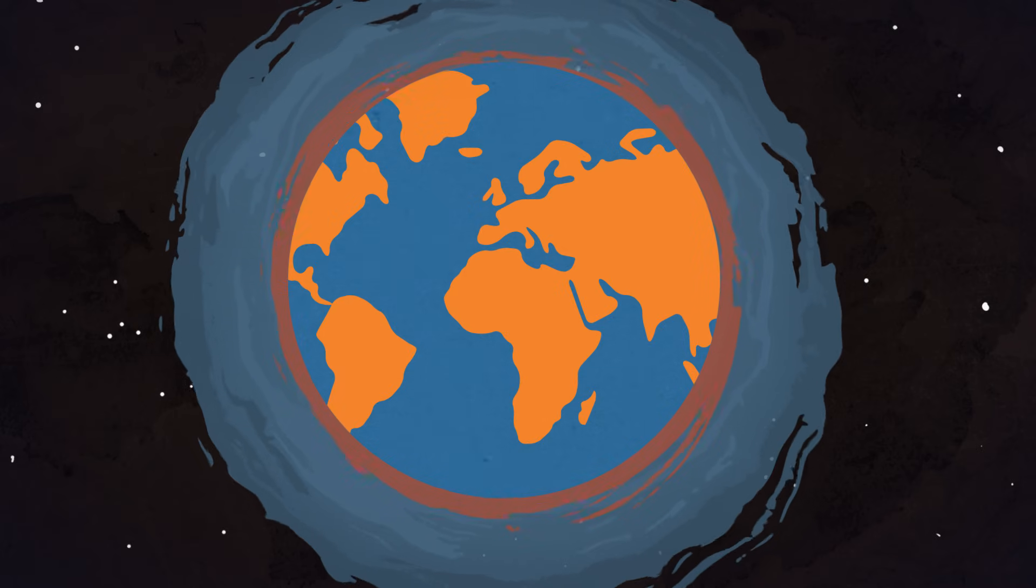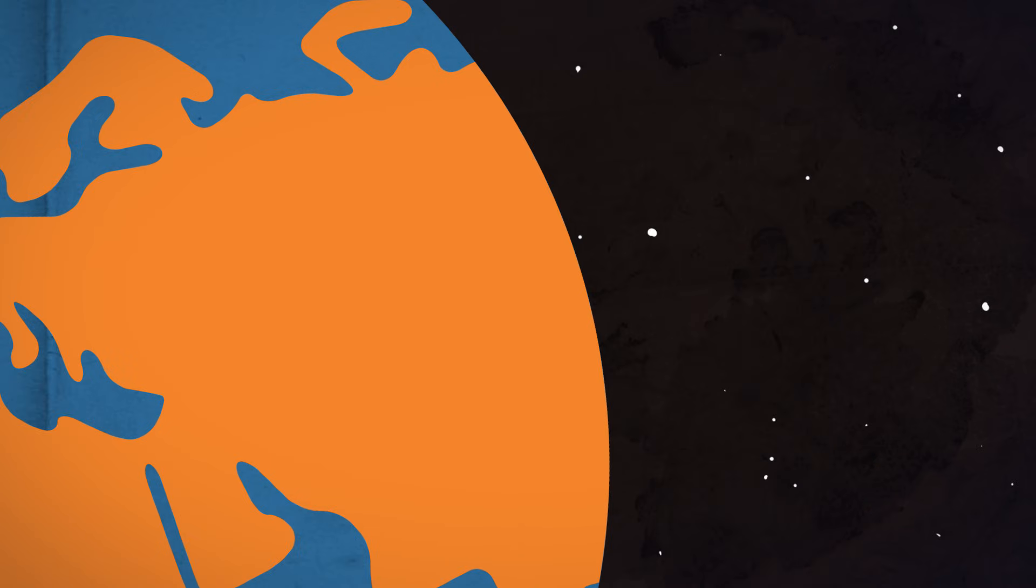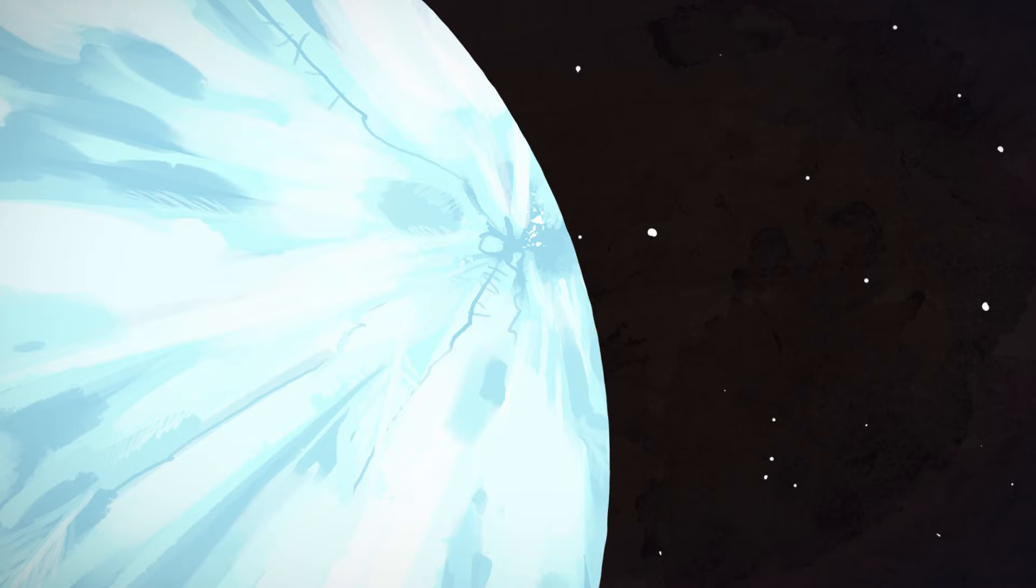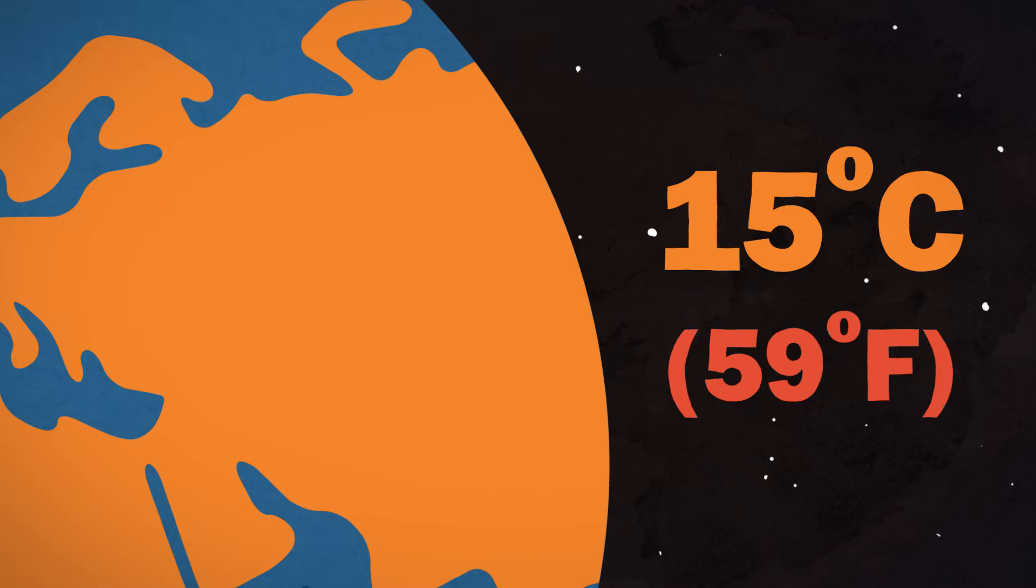Earth's atmosphere naturally contains greenhouse gases. Without them, the world would be way too cold for humans, averaging an icy minus 18 degrees Celsius instead of the cozy average of 15 degrees it is today.